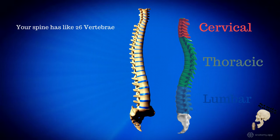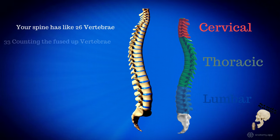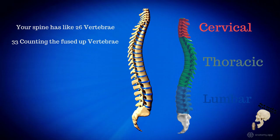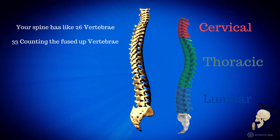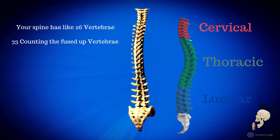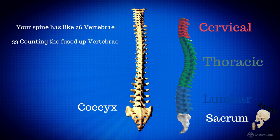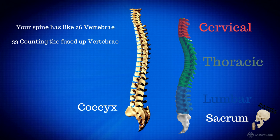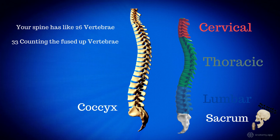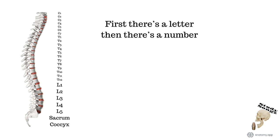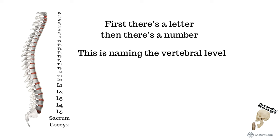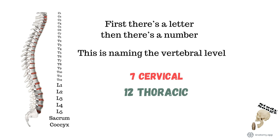Your spine has 26 vertebrae, 33 counting the fused vertebrae — cervical, thoracic, lumbar, sacrum. Don't forget the coccyx, that is the tailbone. First is a letter, then is a number — this is naming the vertebral level.